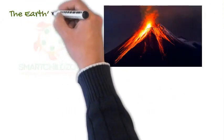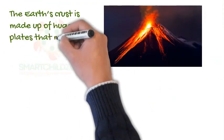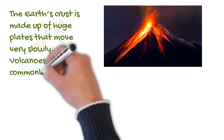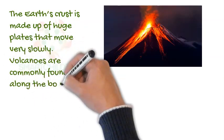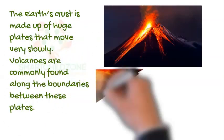The Earth's crust is made up of huge plates that move very slowly. Volcanoes are commonly found along the boundaries between these plates.